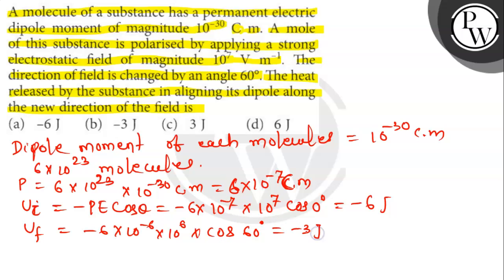The work done goes to minus of change in potential energy, which is minus of minus 3 minus minus 6, equals to minus 3 joules. This is the answer. Option number B is the correct answer. Thank you.